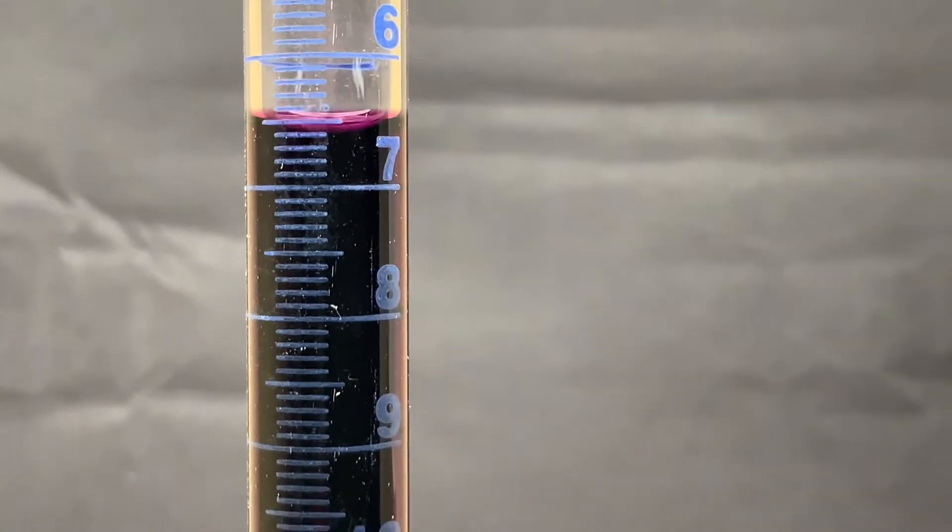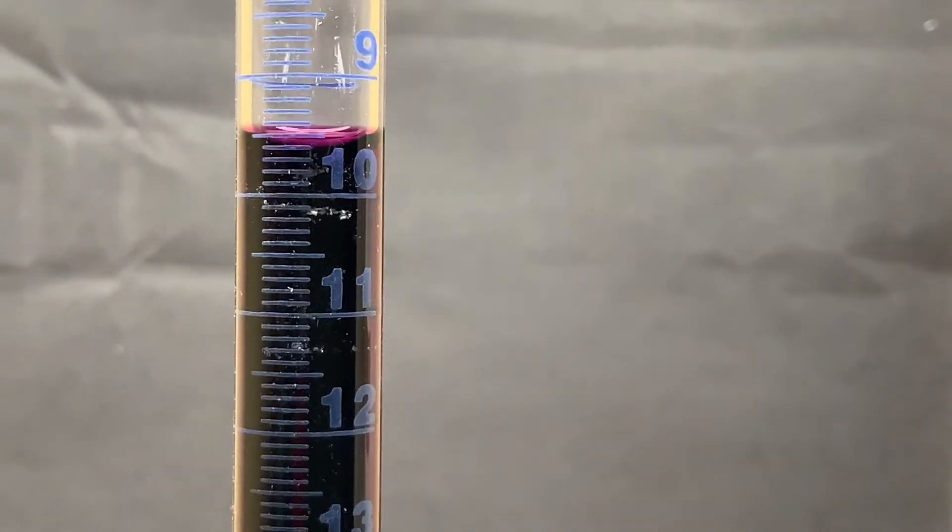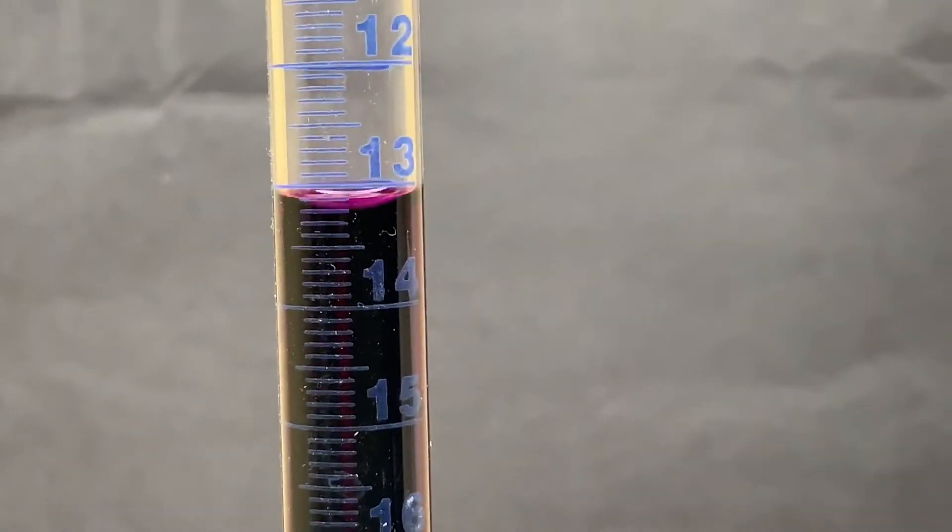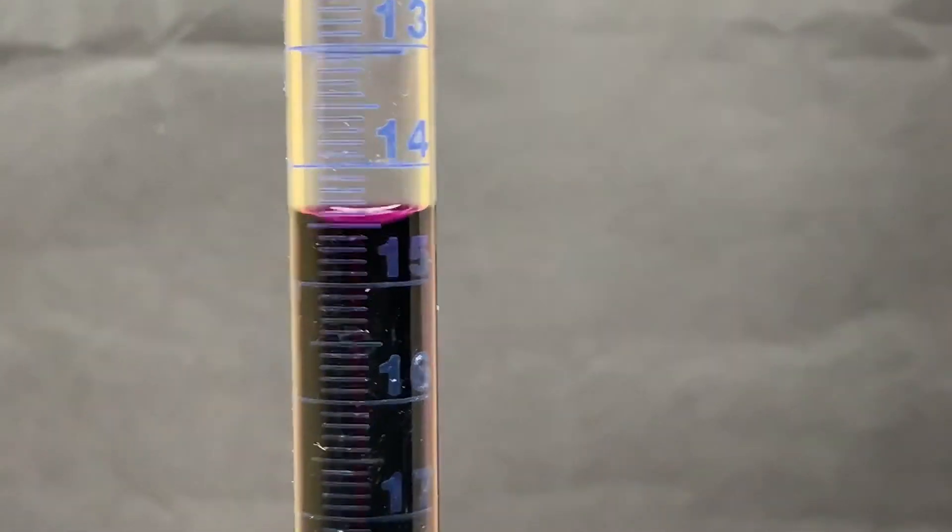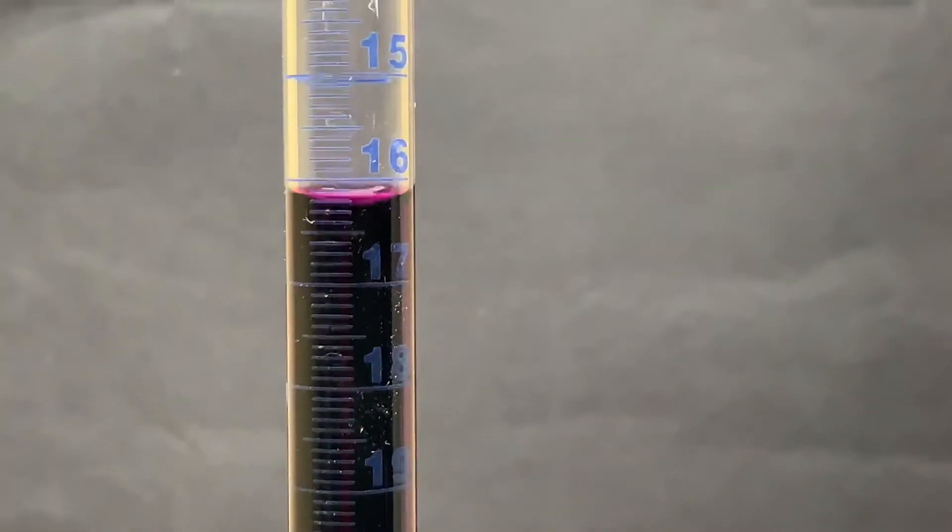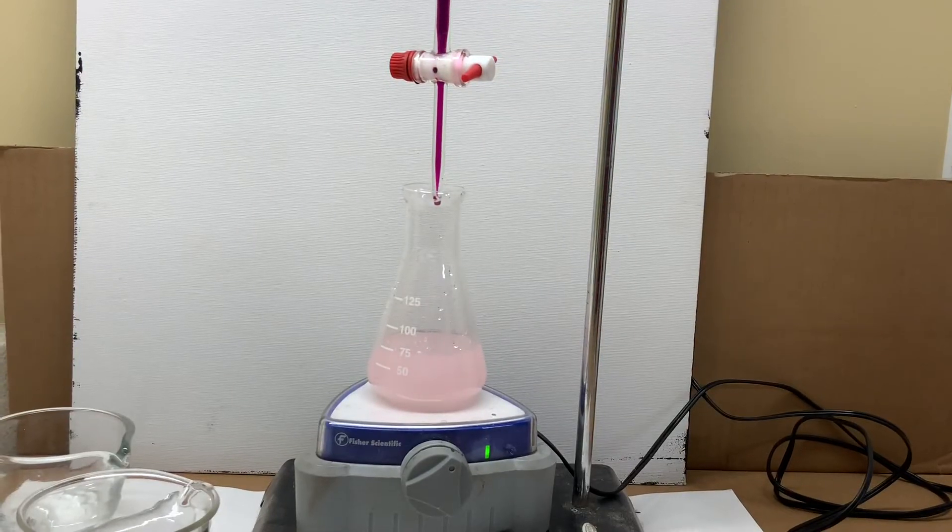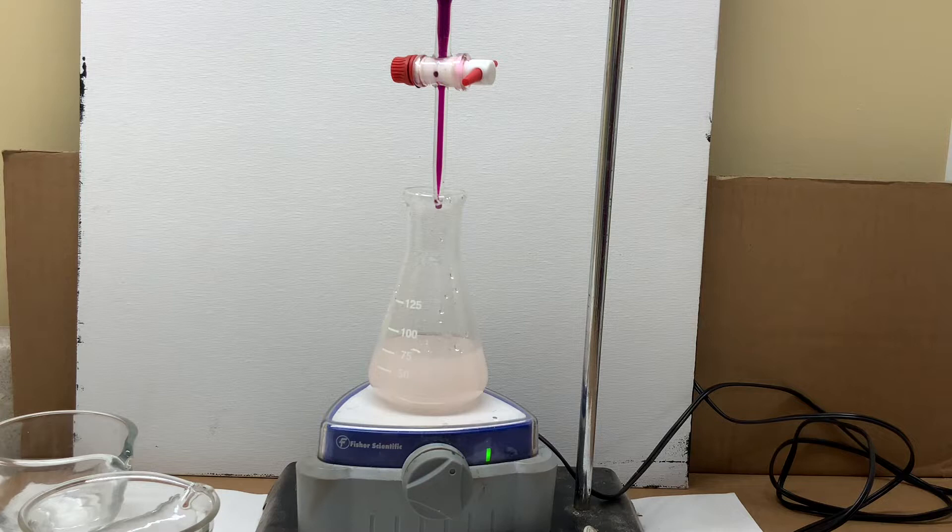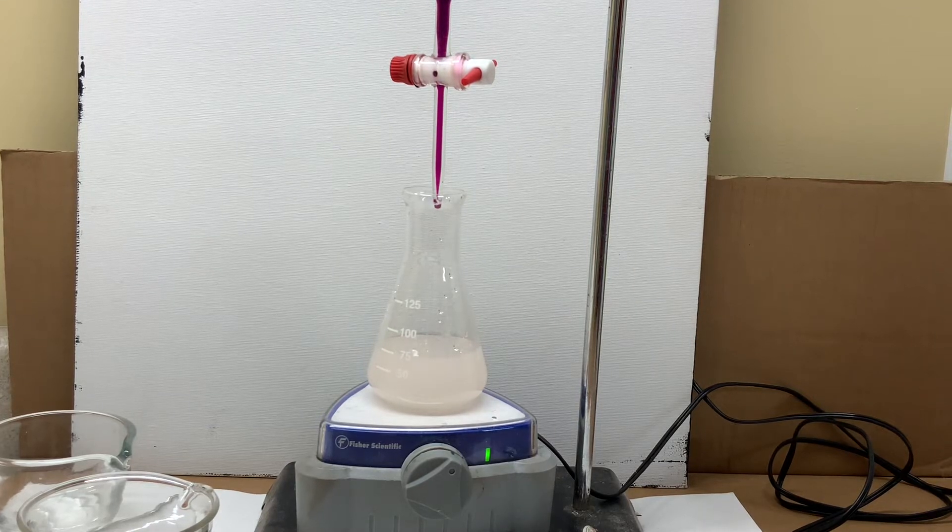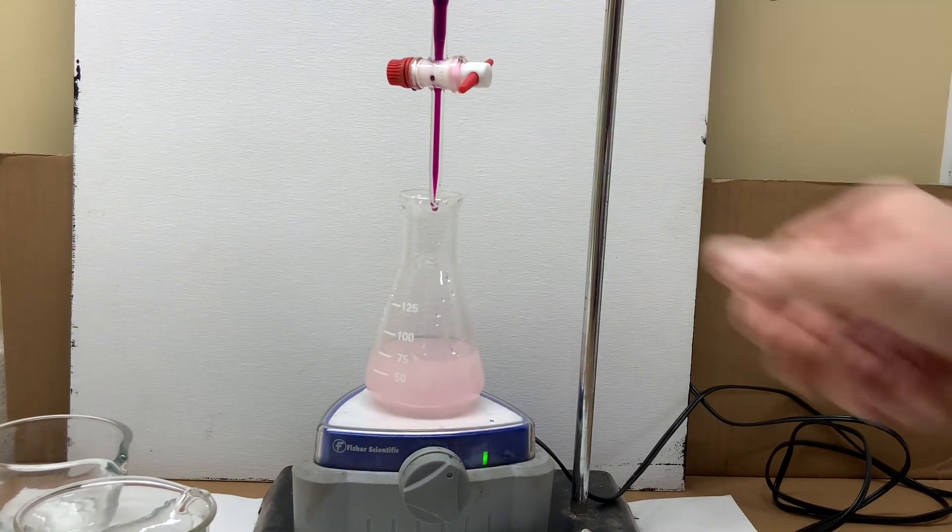The titration proceeds as more and more permanganate is added to react with all of the iron in the flask. The flask will continue to go colorless or cloudy in this case until enough permanganate has been added to react with all of the iron from the iron tablet that's in the flask.